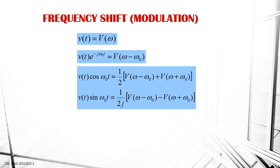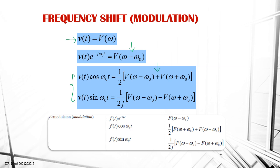Let's look at the next property: frequency shift, or modulation. The basic function is v(t) with Fourier transform V(omega) in the frequency domain. If you have a signal v(t) multiplied by an exponential function, in the frequency domain the signal will be shifted by omega_0 in frequency. Similarly, when a signal in the time domain is multiplied by a cosine or sine function, the signal will be shifted in the frequency domain — this is called the modulation process.